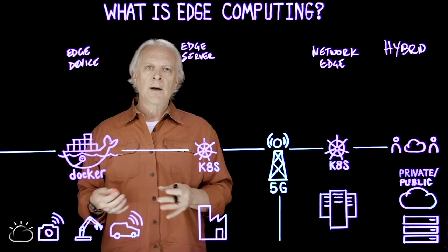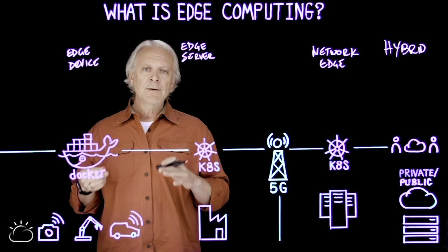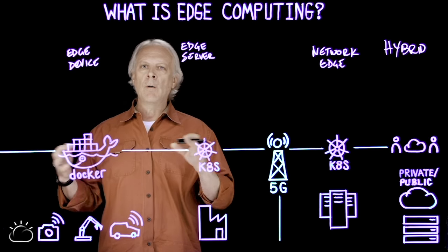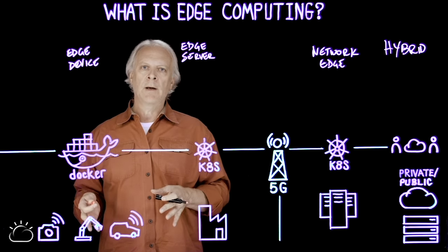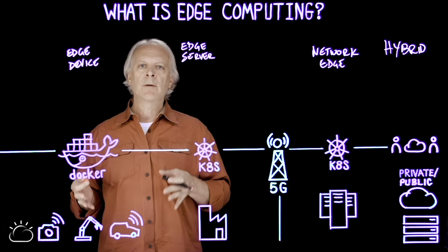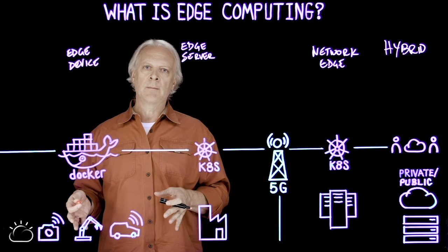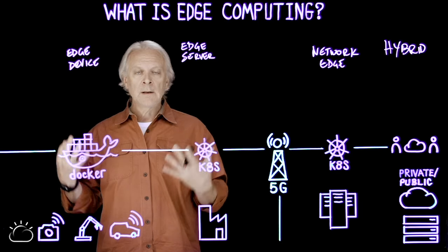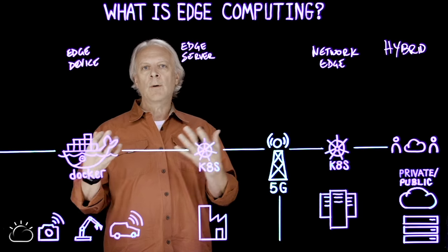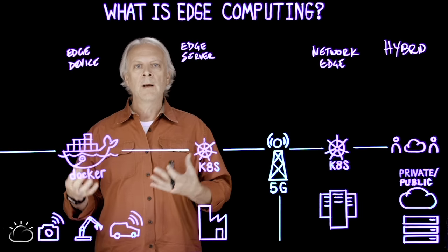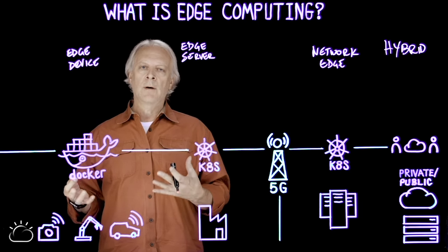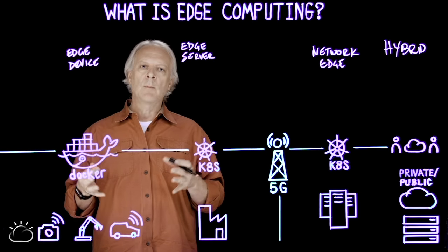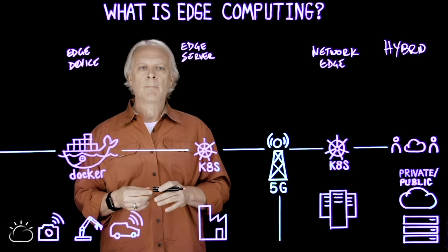Take a car as an example: the average car today has 50 CPUs on it. Almost all new industrial equipment has compute capacity built in, and these computers are being opened up. They often run Linux, and we have the ability to deploy containerized workloads onto these devices — which means they become a place where we can do work that we couldn't do before.